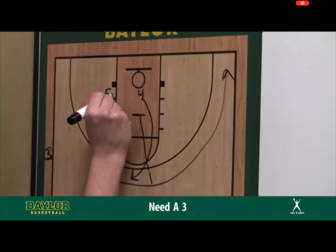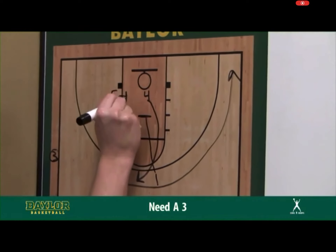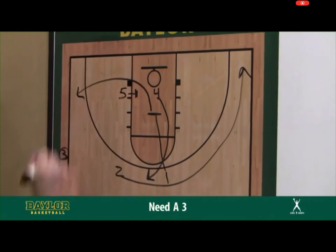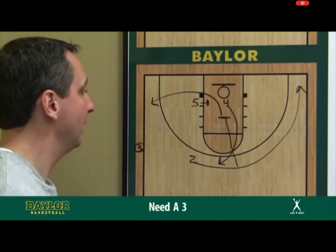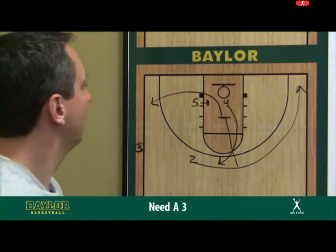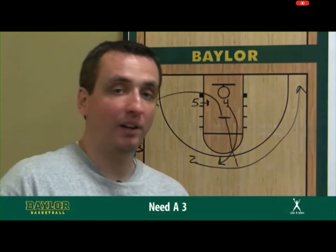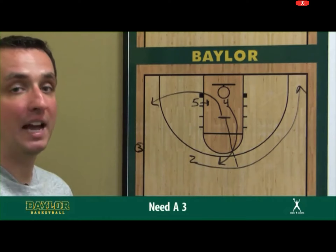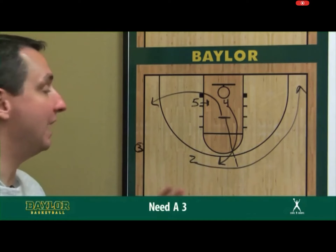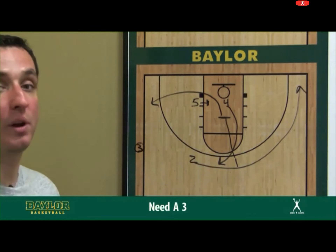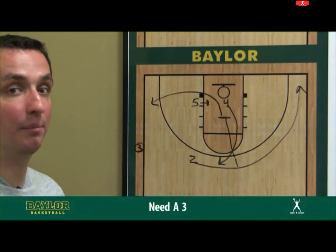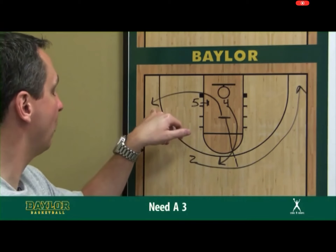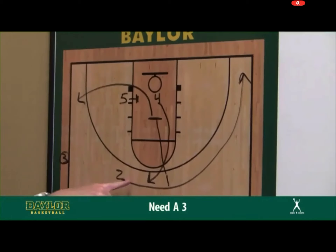Once that happens, the five is going to step in and set a baseline screen to bring the one to the corner — screen-to-screen action. Regardless of what the time is — 18 minutes, nine o'clock, whatever — if you feel you need a three, we're looking at a corner three and a top-of-the-key three.